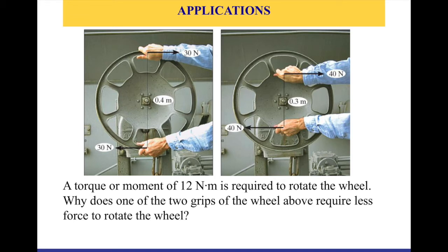In the image to the right we have the same structure also requiring 12 newton meters, but now we need to exert more force — 40 newtons — because our hands are closer to each other. The distance between the forces is smaller, so we accommodate for the reduction in distance by introducing more force. This explains why the left grip requires less force to rotate the wheel: it has a longer distance between the two forces. You can think of a car's steering wheel in the same way.